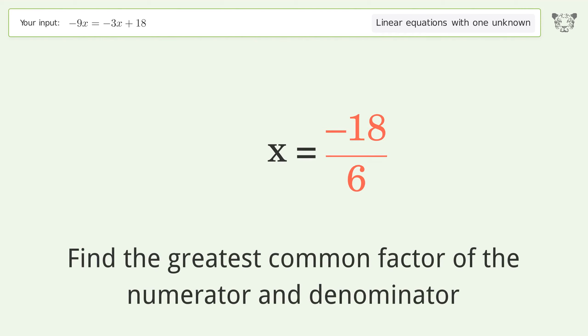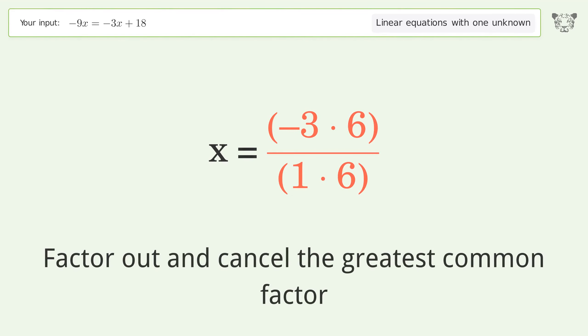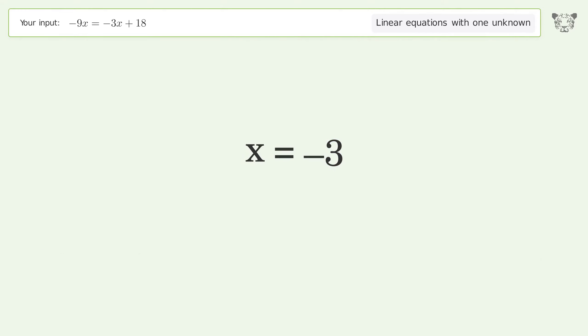Find the greatest common factor of the numerator and denominator. Factor out and cancel the greatest common factor. And so the final result is x equals negative three.